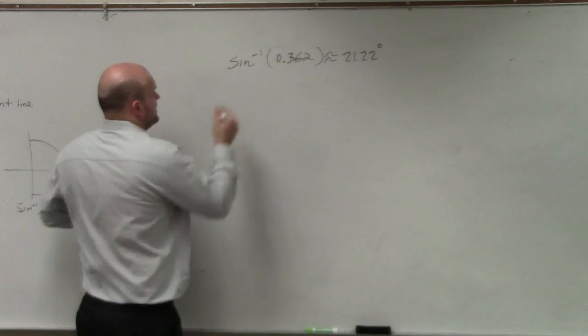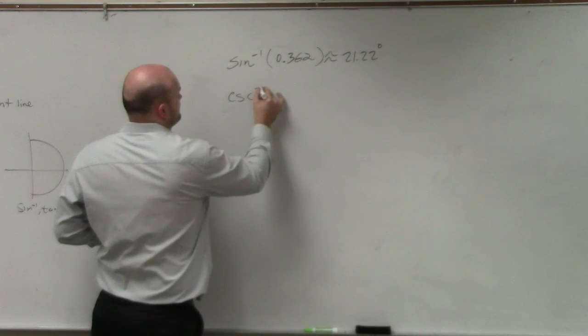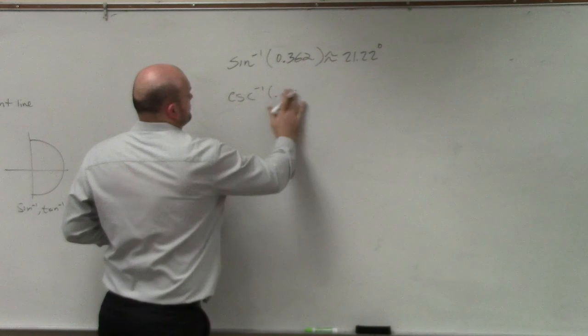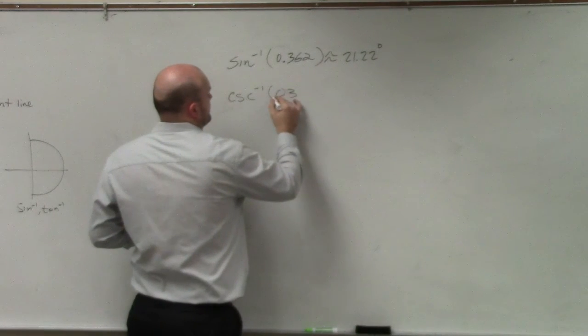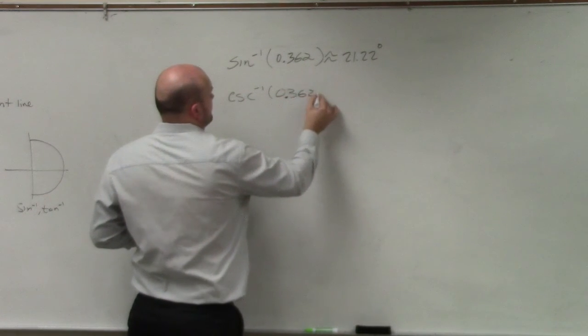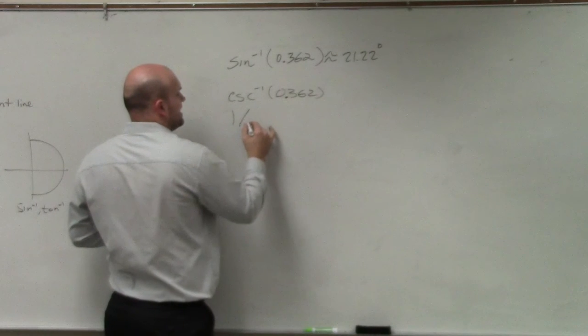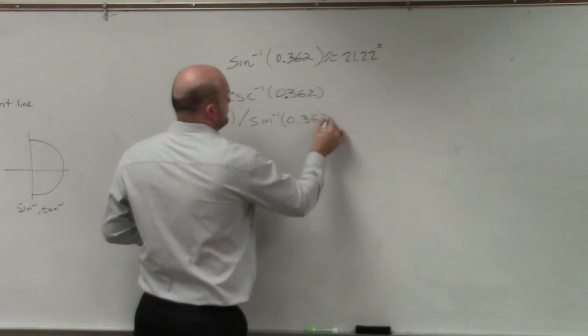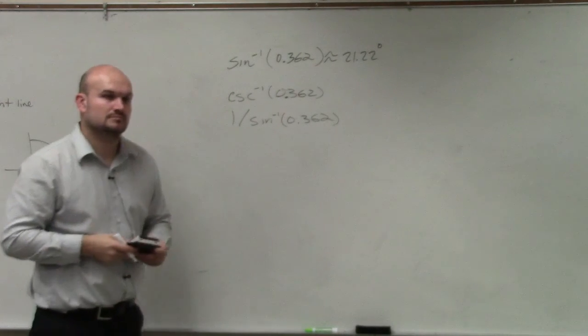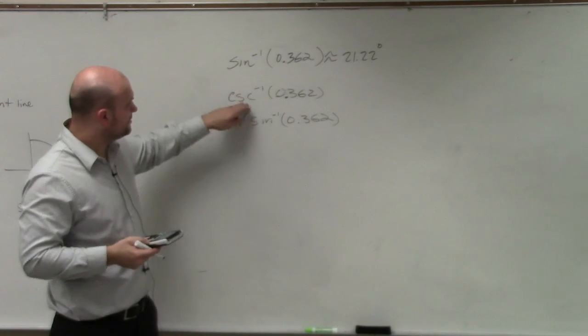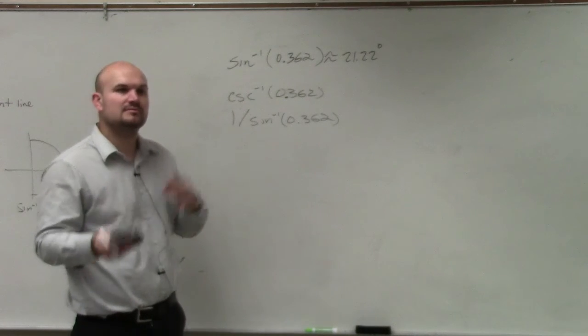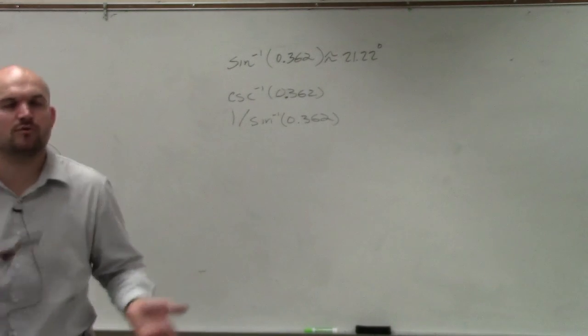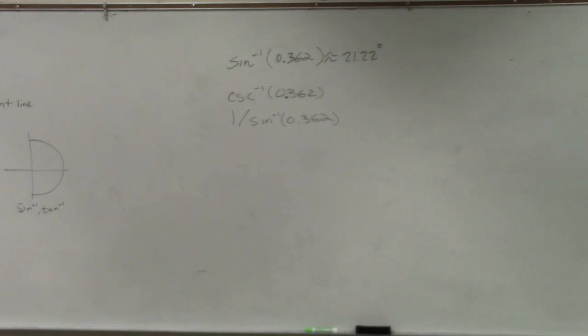So if I want to do the inverse of cosecant, I do 1 divided by sine inverse. Right? Because remember, the difference between these is they're reciprocals of each other. So you can just reciprocate, put it over 1 and do the same thing. OK?